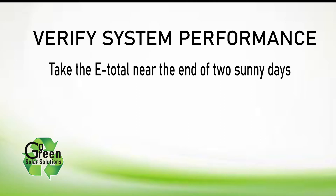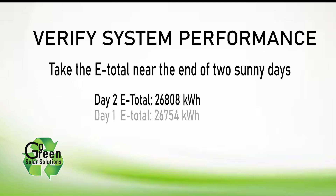One simple way to verify the solar system performance is to write down the E-total on two consecutive cloudless, sunny days at sunset. Subtract the first day's total from the second day's total and you can see how many kilowatt hours your system has produced over the 24-hour period.